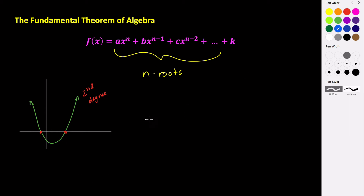We've also seen this with cubics. Maybe you have a cubic that looks something like this — it has three roots, the same number of roots as its degree. So this is a third degree polynomial with three roots.